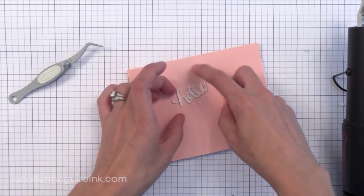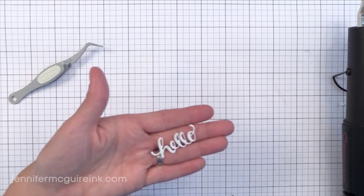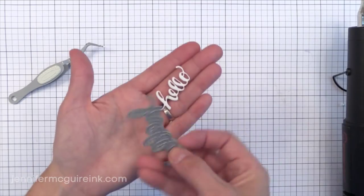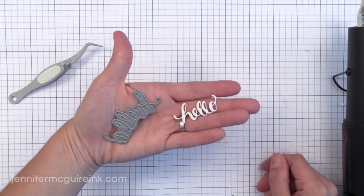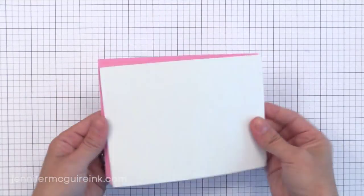So there you can see the little shrunken die cut. It still has a little bit of the dimension to it and you can see how much smaller it is than the actual die itself. So you could create little embellishments of different sizes by shrinking the craft foam. And there you can see there's still a bit of dimension.